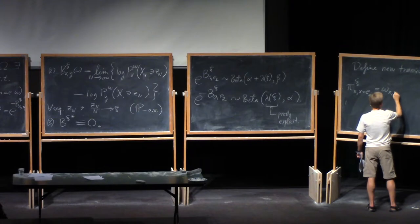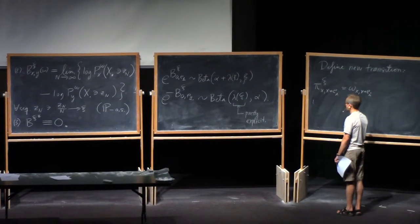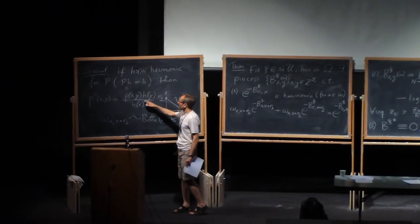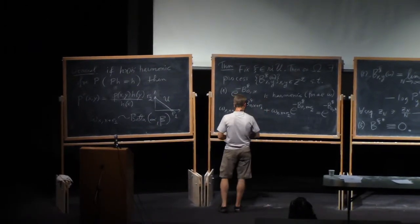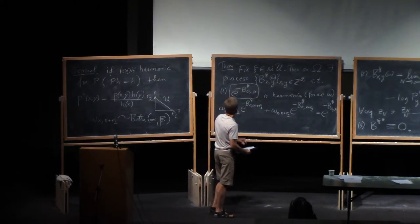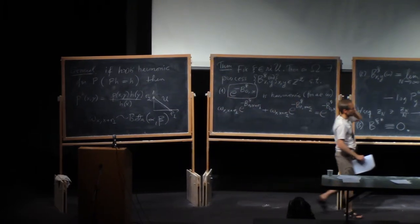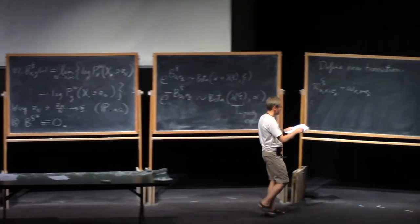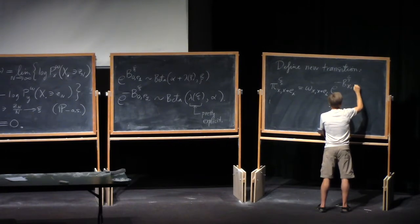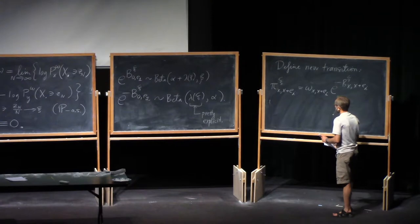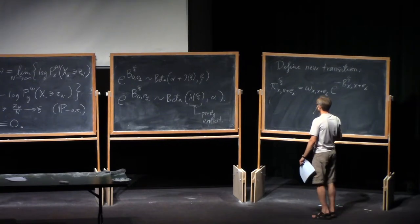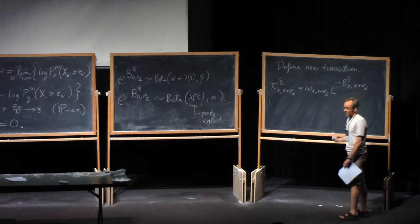So it's going to be the original transition probability, omega, and then multiplied by a ratio of h's. What's my h now? My h is now this harmonic function here. e to the minus b, but because of the additivity, I can combine, I can combine that ratio into a single, single exponential. So e to the minus b xi of x to x plus ei. So that's now a legitimate transition probability. And it respects shifts again, because these two ingredients do. So it's a legitimate RWRE.